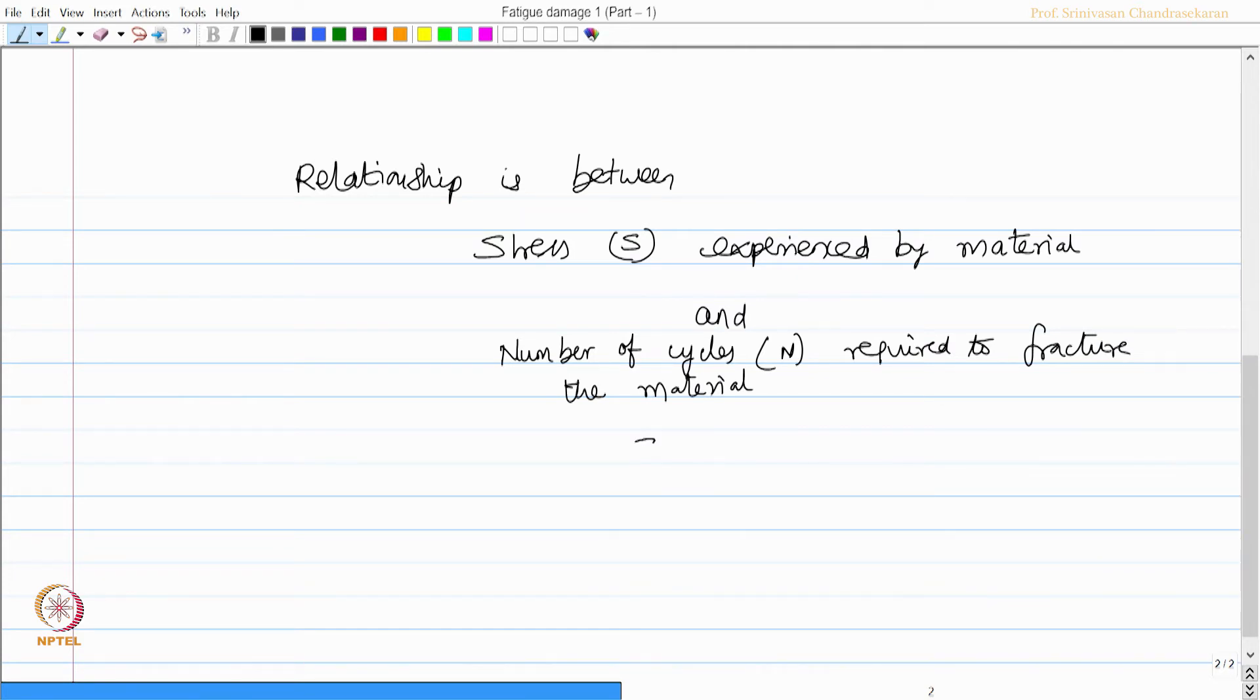We call this relationship as S-N relationship. This is expressed as N times S to the power m equals k. I call this equation number 1.